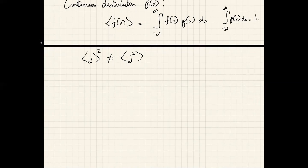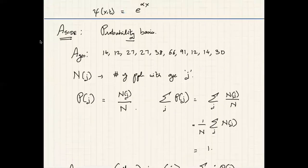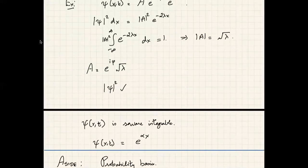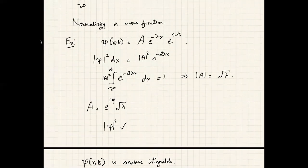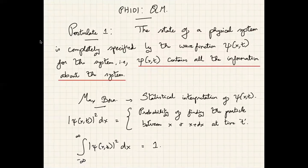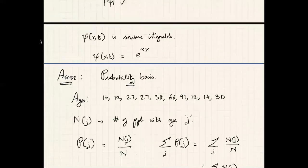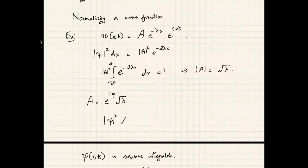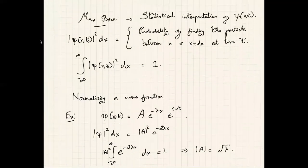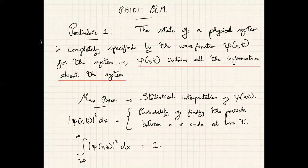Let us quickly recap. Once I know the state of a physical system I can calculate everything I need to know about it. We will explain how to do this calculation once I have introduced the notion of operators. For now, once I know ψ(x), I know pretty much everything about the system. You should only use wave functions that are square integrable, meaning the integral from minus infinity to infinity of |ψ|² exists.